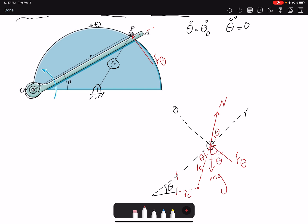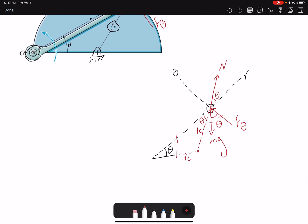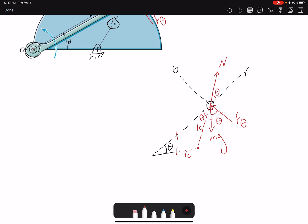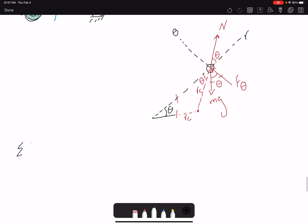Now I can write summation of my forces in R and theta to find the unknown forces. So the question is asking for the angle, so angle is not known. Well, let's set up our equation first. Summation of forces in R, Mar.